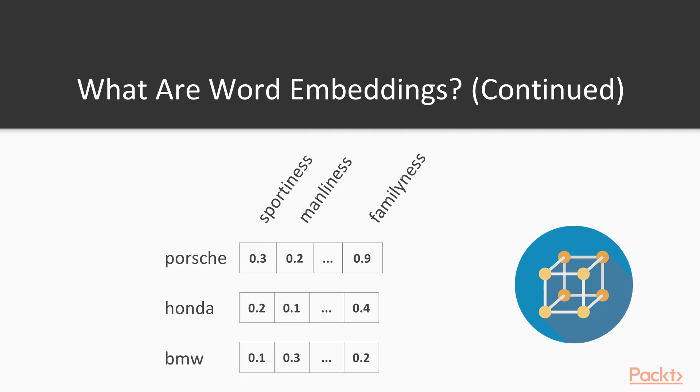A cool way to think about it is as such, which I've read at some places. It's that the dimension of word embeddings can describe certain aspects of the world. Like if you were to make a word embedding of cars, some of the dimensions could perhaps pertain to sportiness, manliness or familiness of the car.